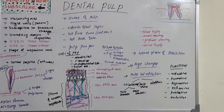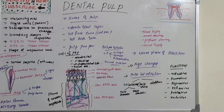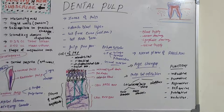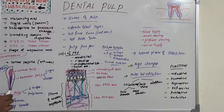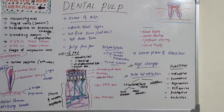The radicular pulp occupies the pulp canals in the root of the tooth. In anterior teeth it is single, and in posterior teeth it is multiple because they have multiple roots. The radicular portion of the pulp is continuous with the periapical tissues through the apical foramen. Any infection present can spread to the periapical region through this foramen.